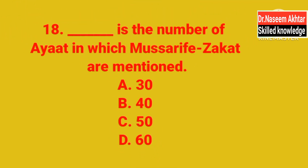MCQ 18: Dash is the number of ayat in which Masarif-e-Zakat are mentioned. Masarif Zakat کے بارے میں کتنی آیات میں بتایا گیا ہے؟ A. 30, B. 40, C. 50, D. 60. The correct answer is D — 60.